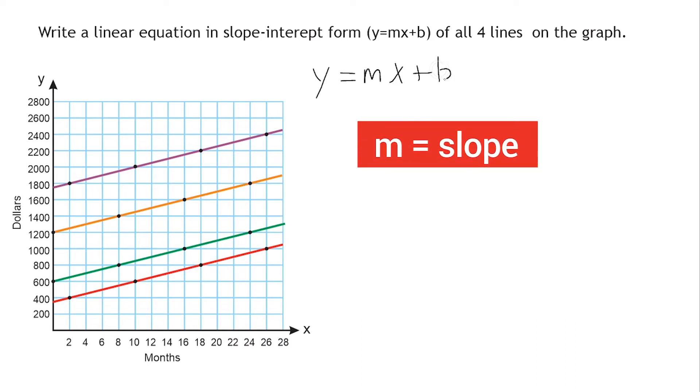And the first thing that I'm going to do is identify what the slope of our line is. Now, as you can see on our graph, they already have some points plotted for us. And to find the slope of any line, you just need two points that are located on that line. So I'm just going to use this point here and this point here.